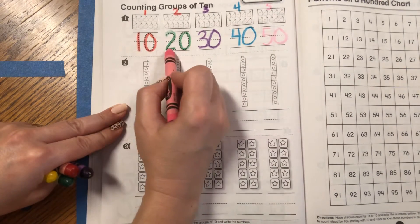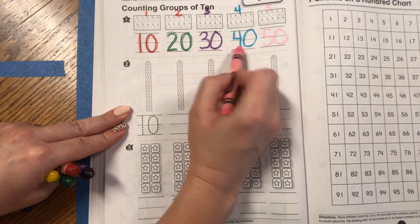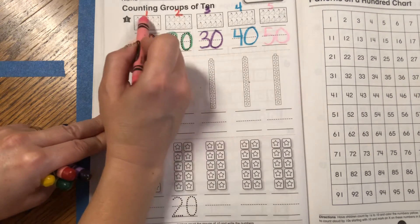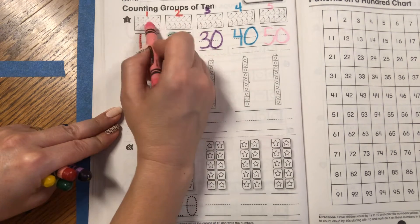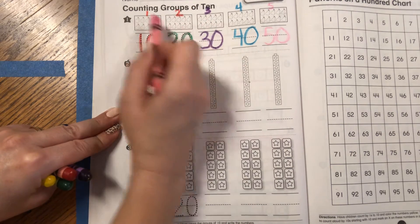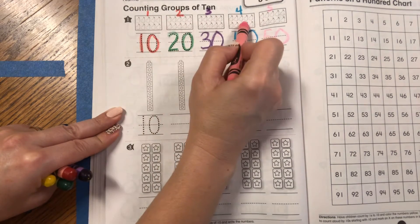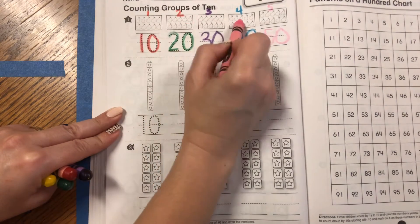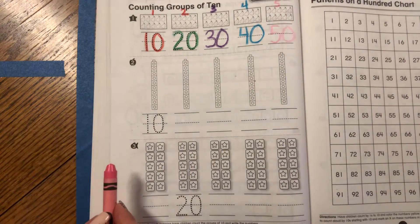10, 20, 30, 40, 50. One 10, two 10s, three 10s, four 10s, five 10s. Great job.